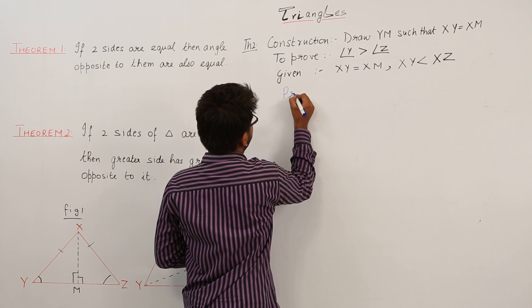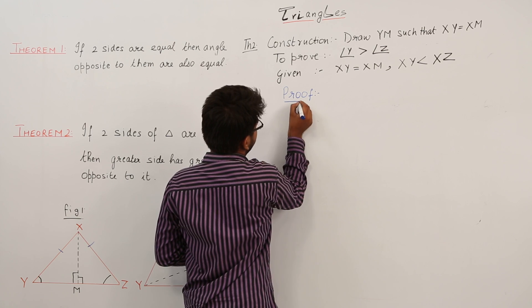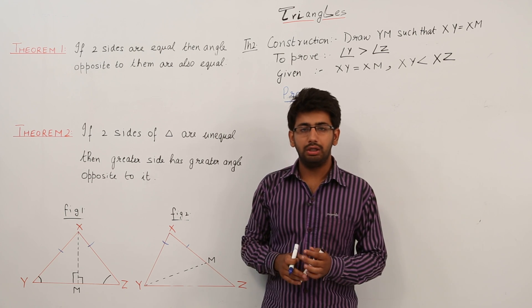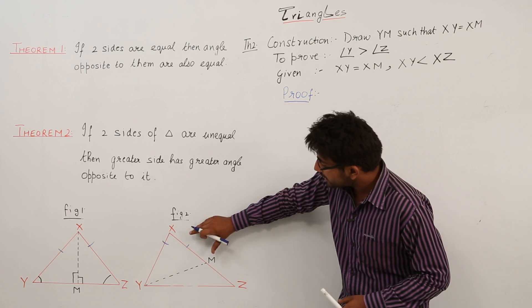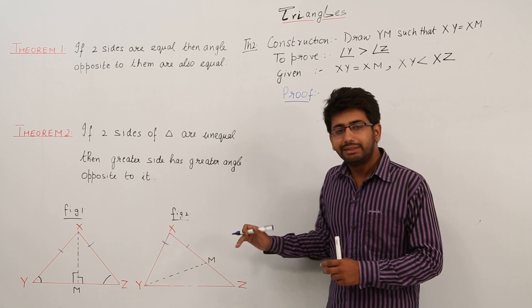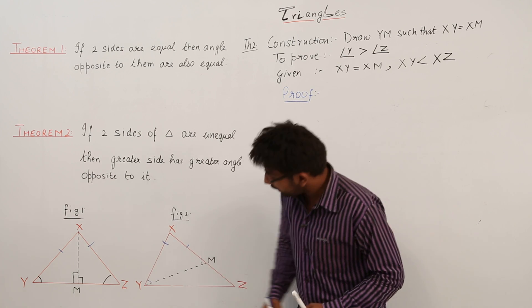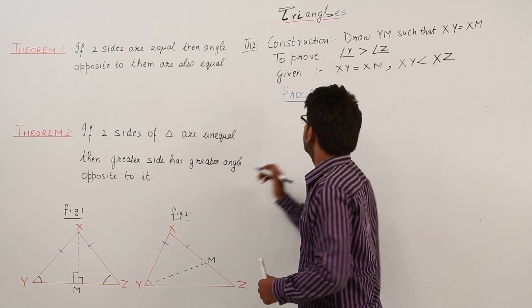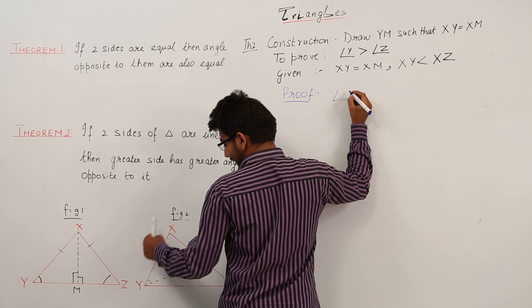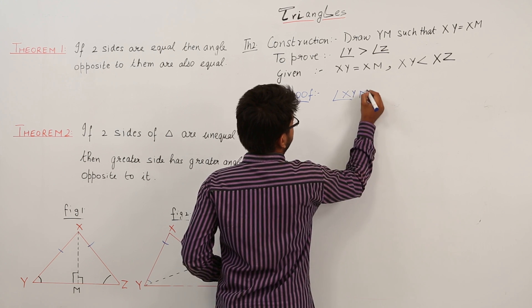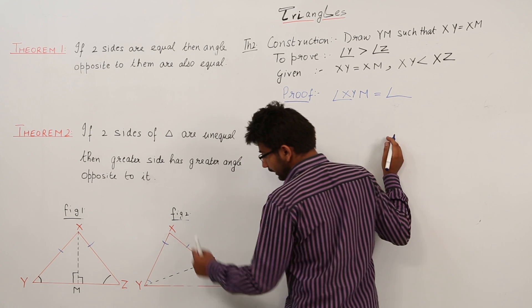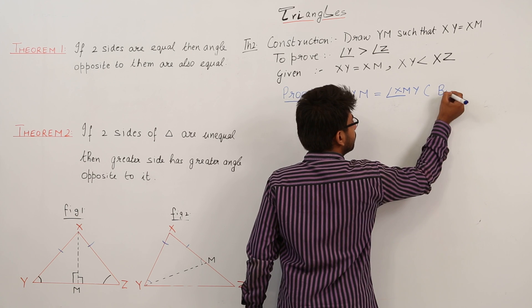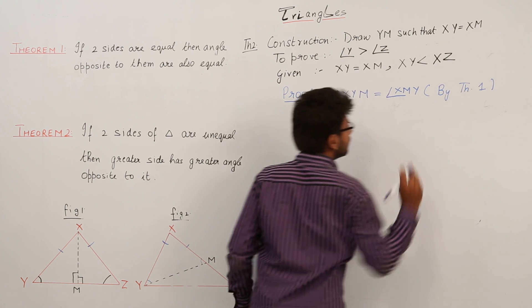Now, as you know from theorem one, if two sides of a triangle are equal, then the angles opposite to them are also equal. In triangle XYM, these two sides XY and XM are equal, so the angles opposite to them should also be equal. Therefore, angle XYM and angle XMY are equal by theorem one. So I'll write: angle XYM is equal to angle XMY by theorem one.